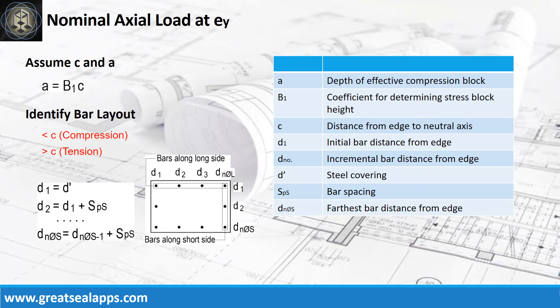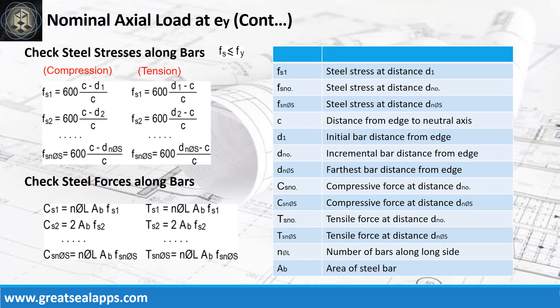Let the value of neutral axis c correspond to the given eccentricity at the y-axis. Identify bar layouts with their distances from the edge of the column section and their force type relative to their position from the neutral axis. At the y-axis, get the stress of each bar layout relative to the distance from the neutral axis and get their forces with their corresponding force type.